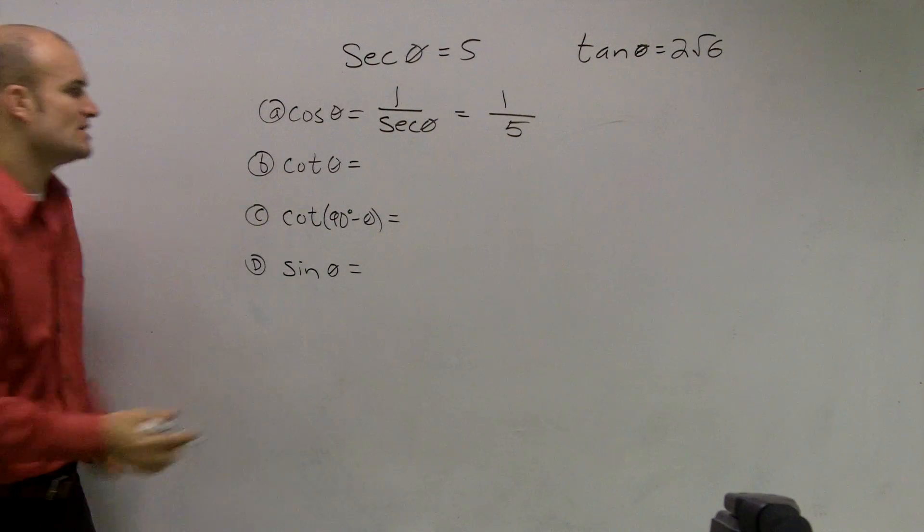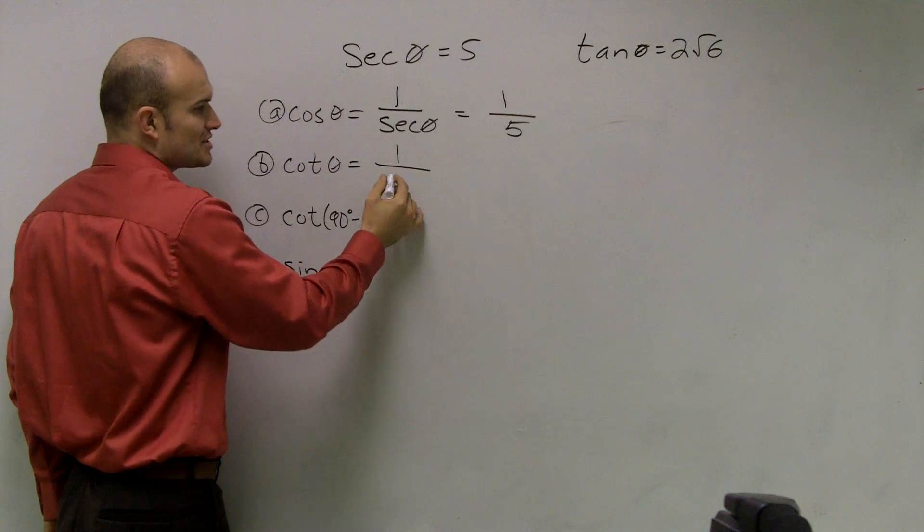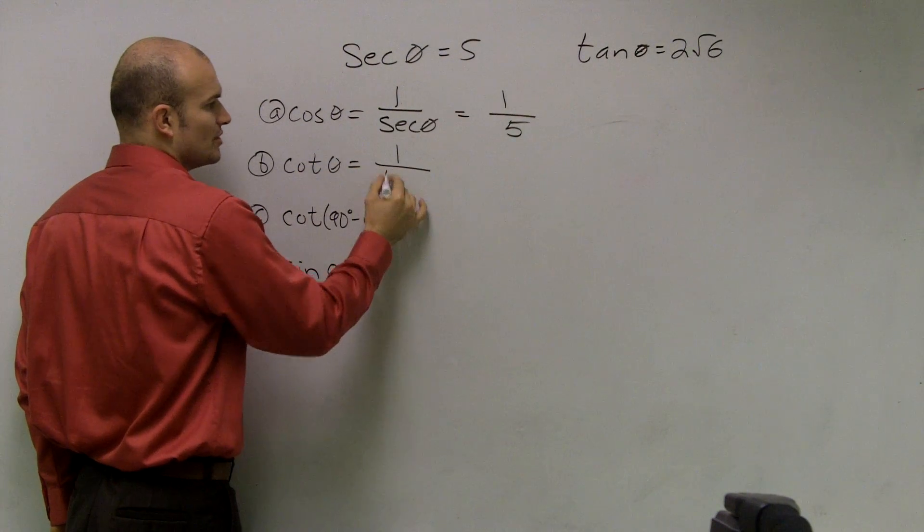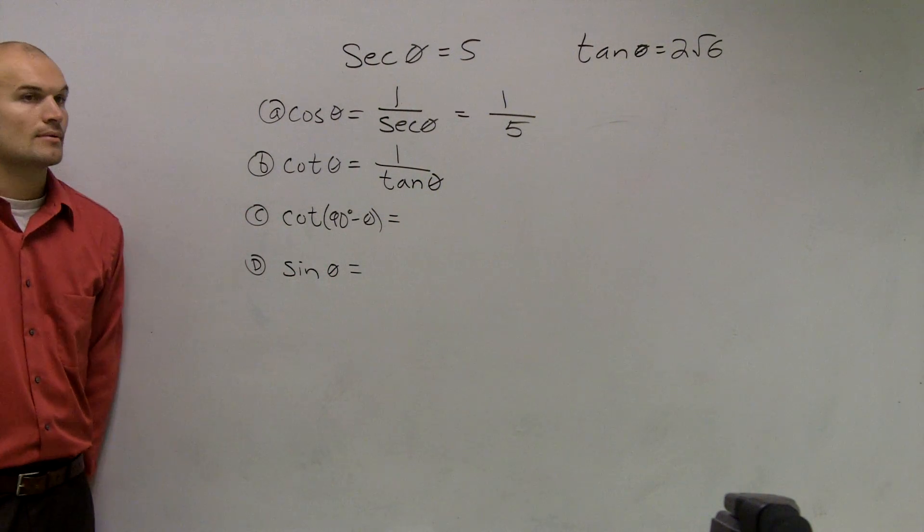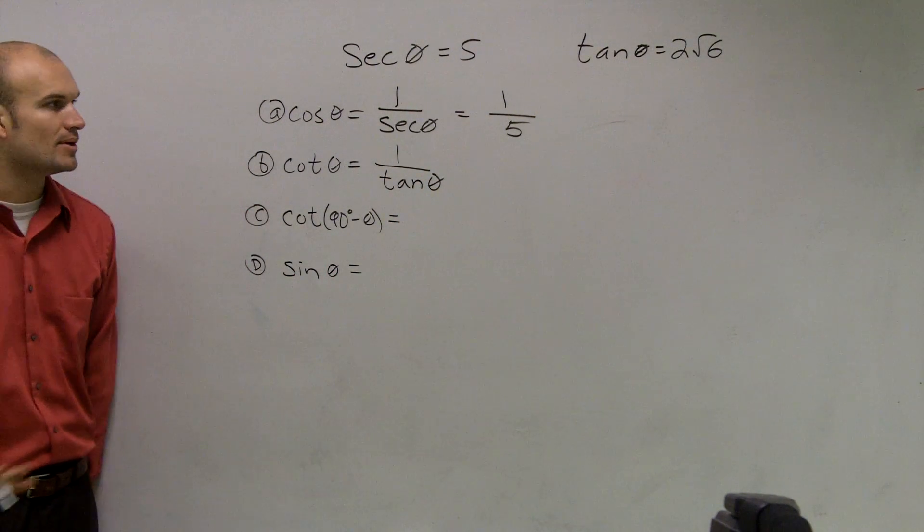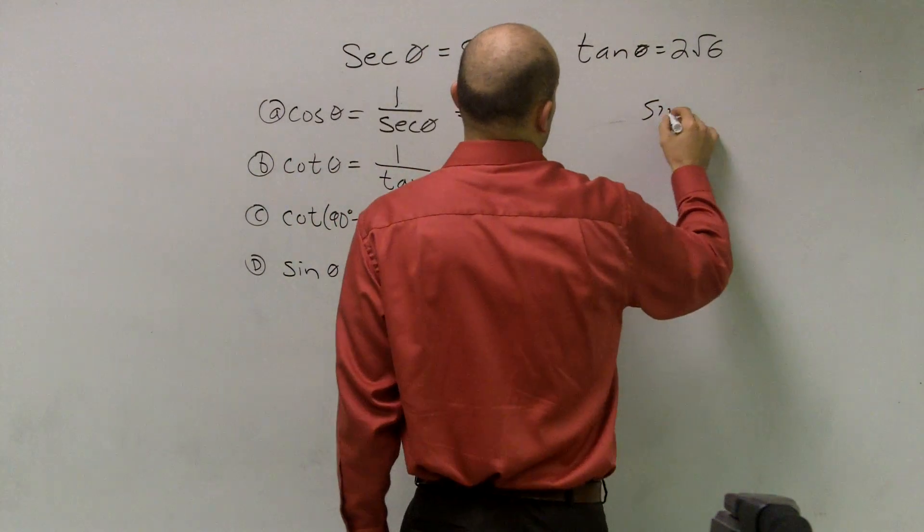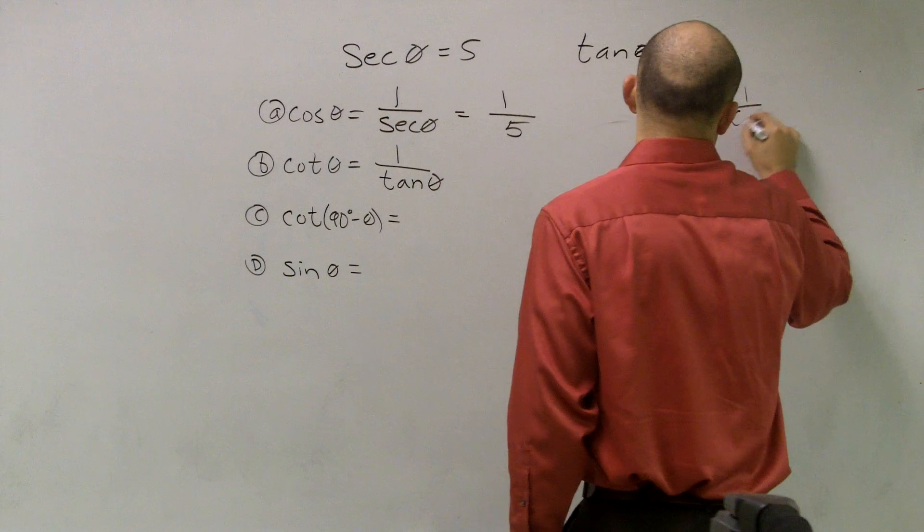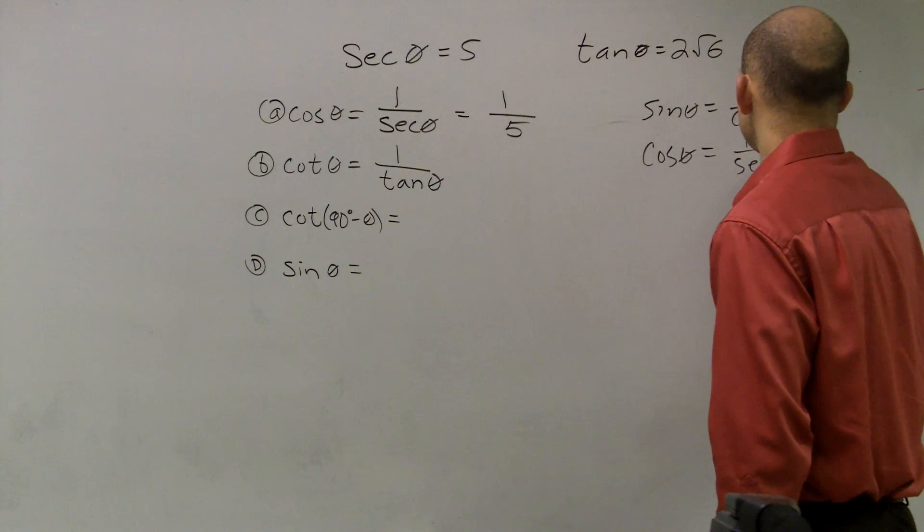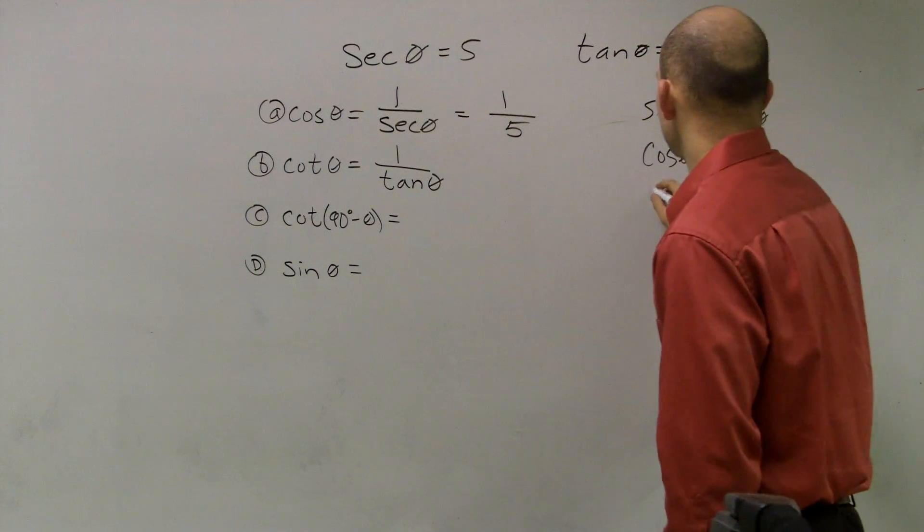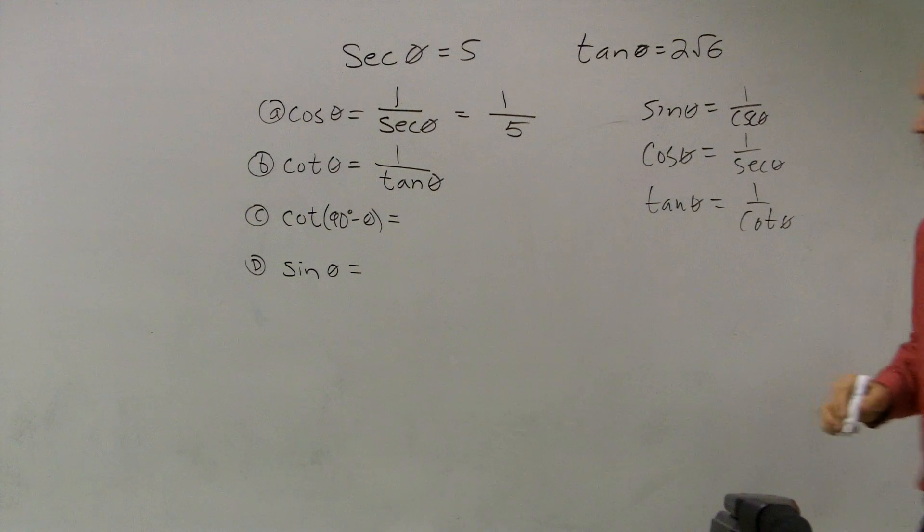The next thing is cotangent. Cotangent is the same thing. We need to remember what is cotangent. Cotangent's reciprocal is 1 over tan theta. So we have to remember how our angles are related to each other. Sine of theta equals 1 over cosecant of theta, cosine of theta equals 1 over secant of theta, and tangent of theta equals 1 over cotangent.